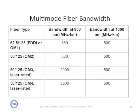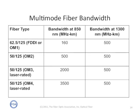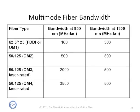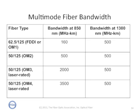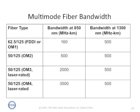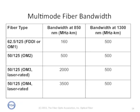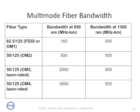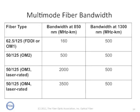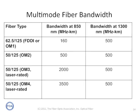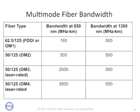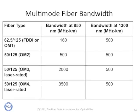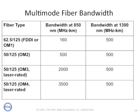Multi-mode fiber comes in several different varieties depending on its bandwidth when used with 850 nanometer VCSEL laser sources typical of high-speed systems used in premises cabling. Single-mode fiber also has many different variations according to what distance it's going to go, what wavelength it's going to be used at, and how it might be used for wavelength division multiplexing — a very complex subject beyond the scope of this simple lecture.